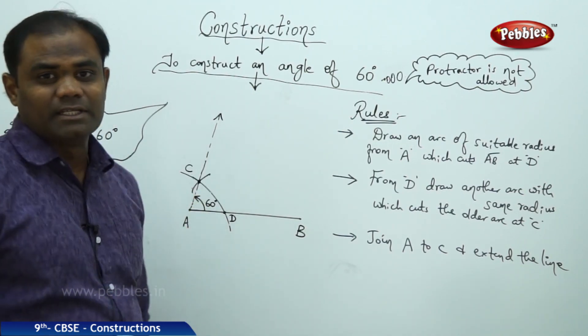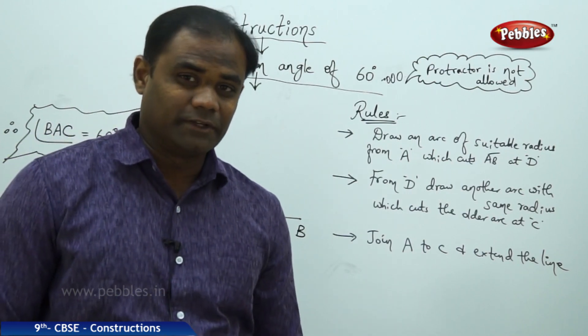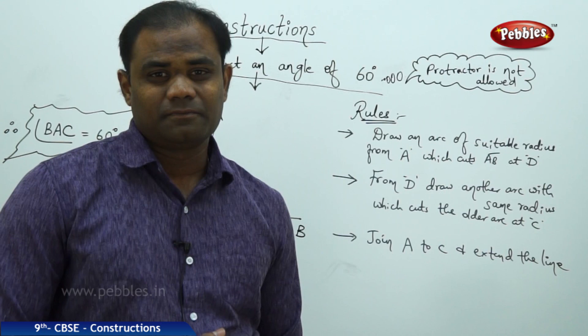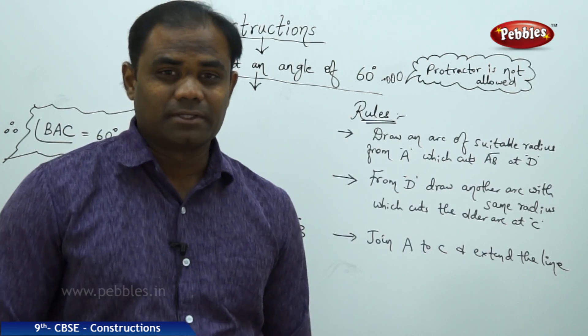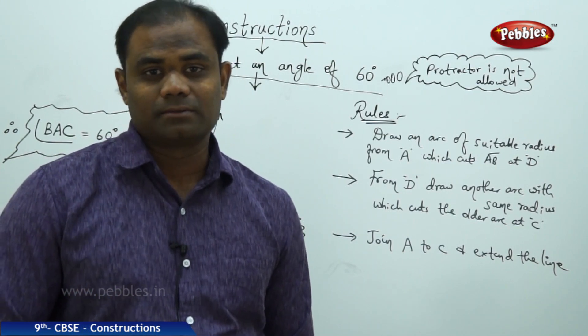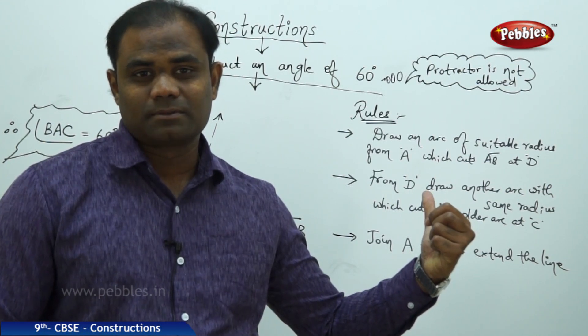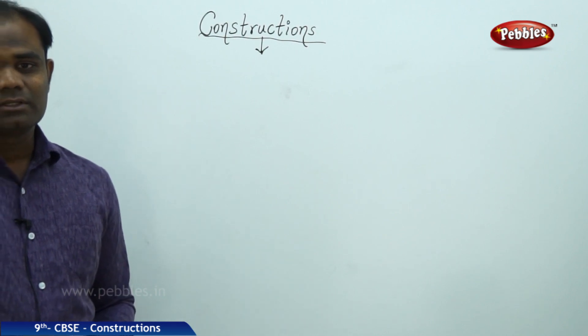Angle BAC is perfectly 60 degrees. We use this simple technique to draw a 60-degree angle without using a protractor. Now let us see the construction of triangles with certain conditions — specifically, how to construct a triangle whose base, base angle, and sum of the other two sides are given.